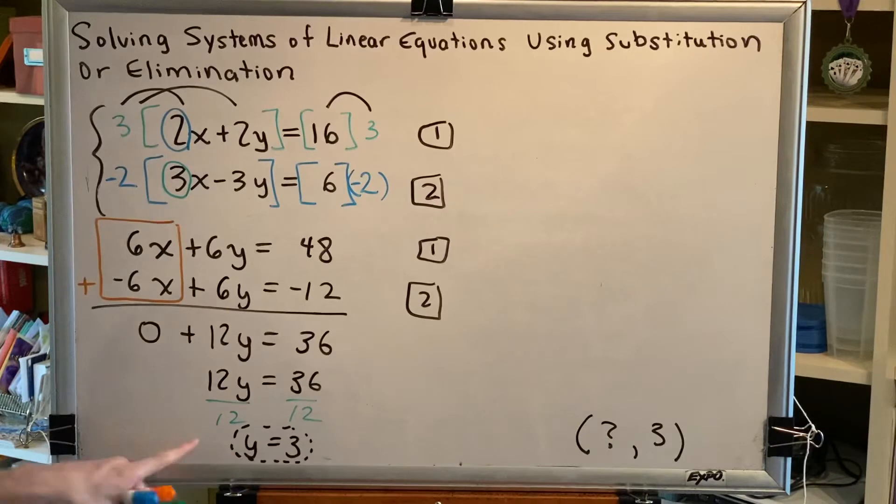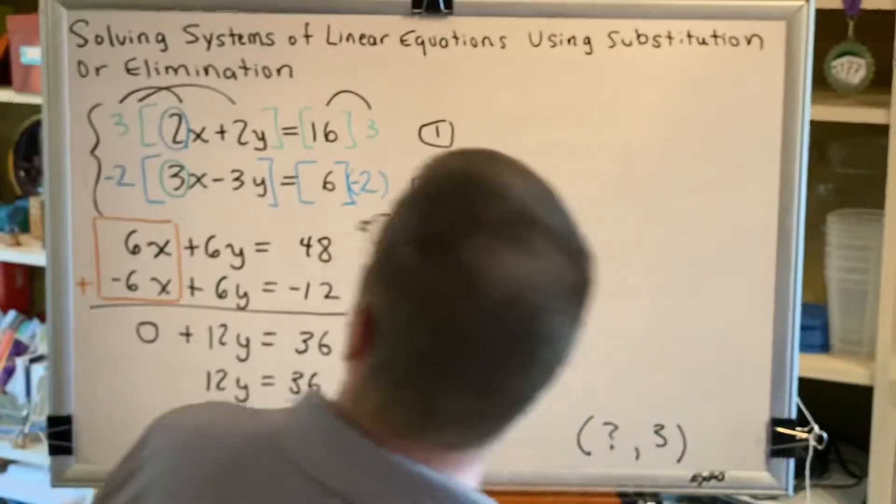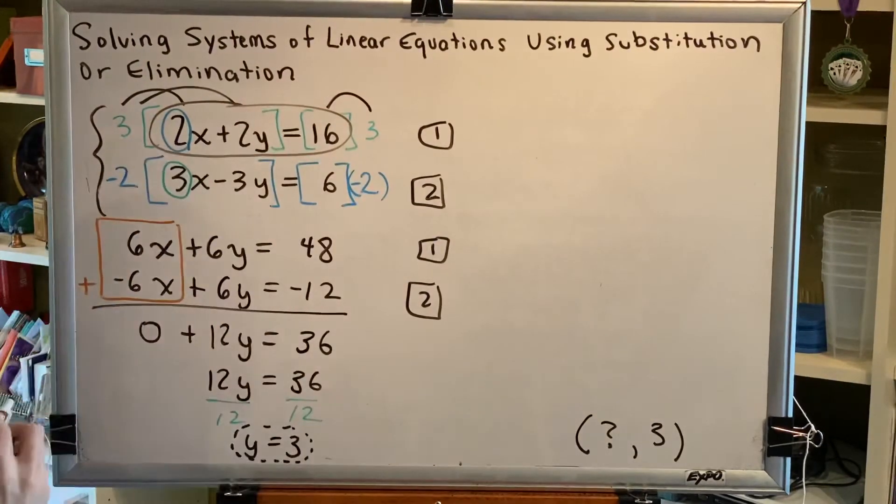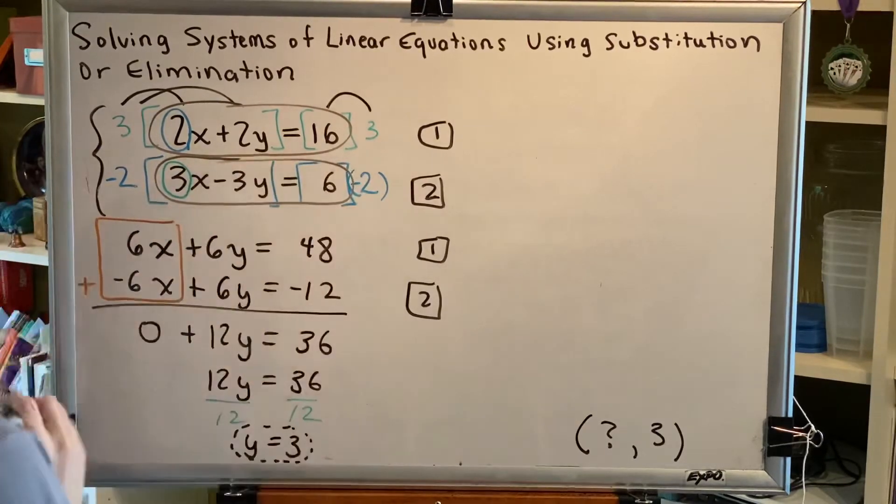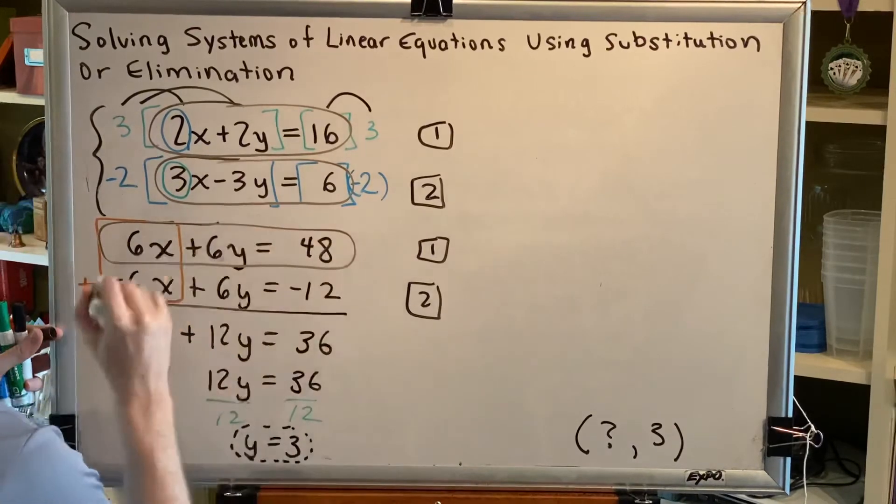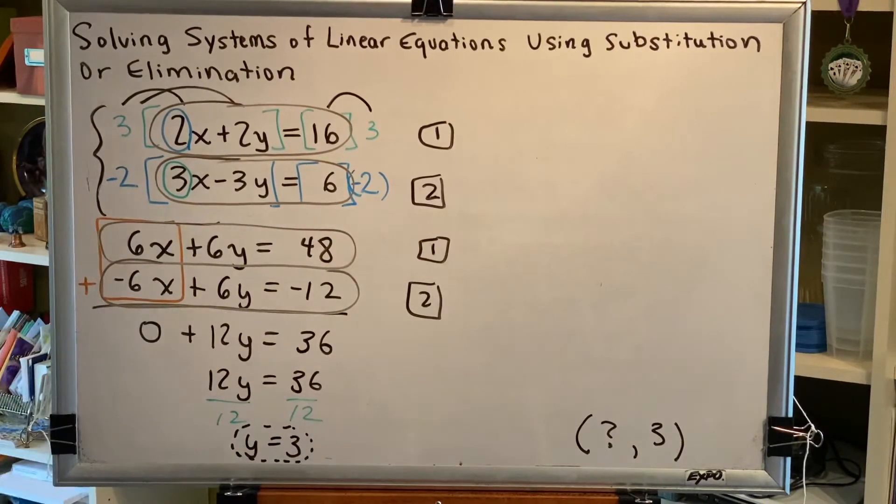Which means we have to plug y equals 3 into one of the equations that we have in our solution. And we have many to choose from. It can be the original equation 1, which was this 2x plus 2y equals 16. Original equation 2, which was 3x minus 3y equals 6. Our modified equation 1, or our modified equation 2. Pretty much any equation that still has x and y in it from this problem.